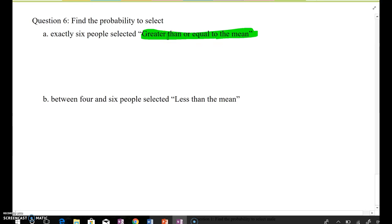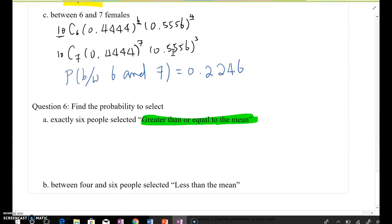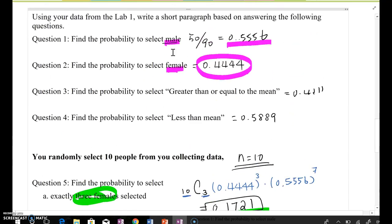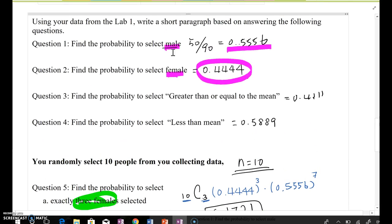Now we need to go back to the table and copy what was the probability of the greater than or equal to the mean and the less than mean. If you look at the top part here, the greater than or equal to the mean was 0.41111 and less than mean 0.5889.